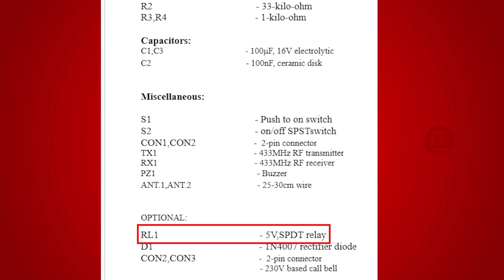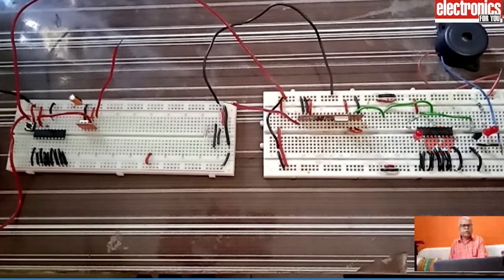One 5V relay is an optional component at the receiver end in case you need to create an AC doorbell. Here we are creating a prototype. Hence, buzzer will be sufficient.